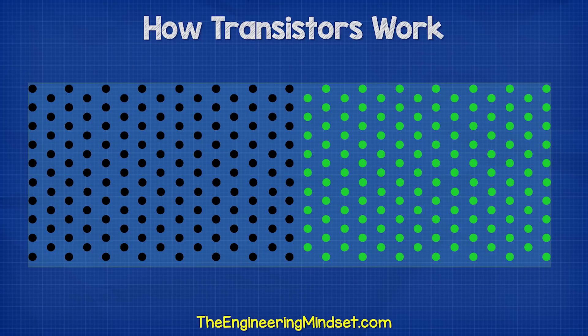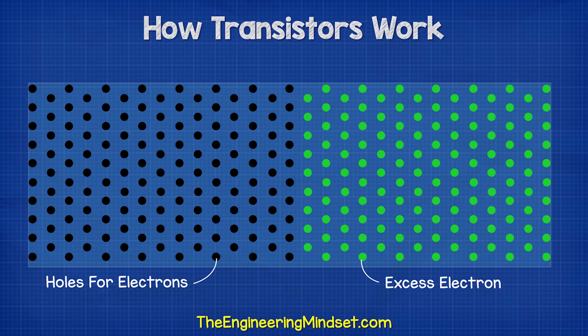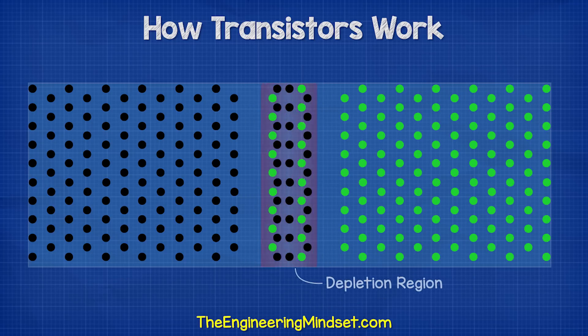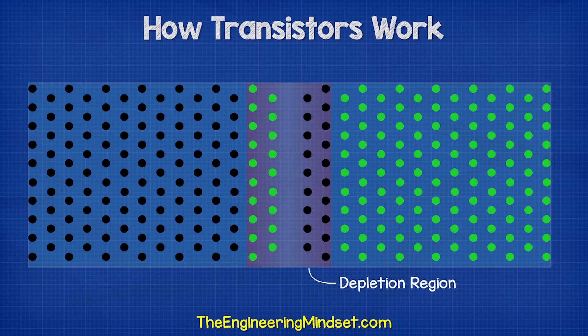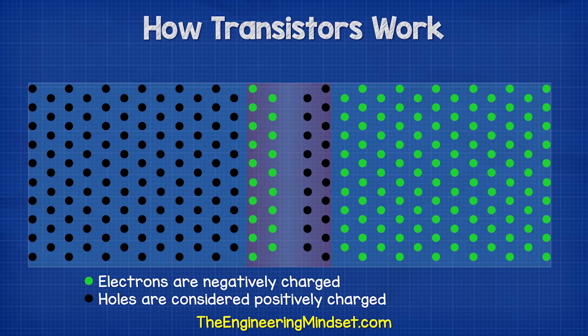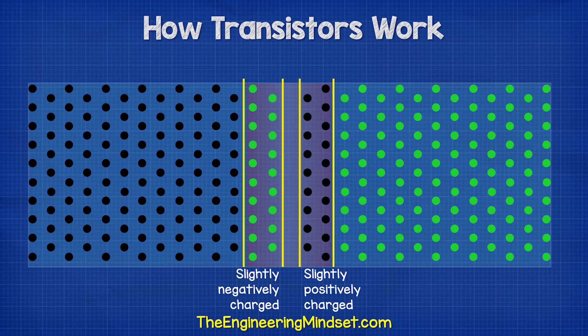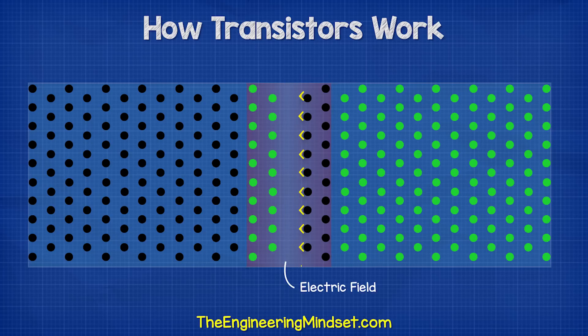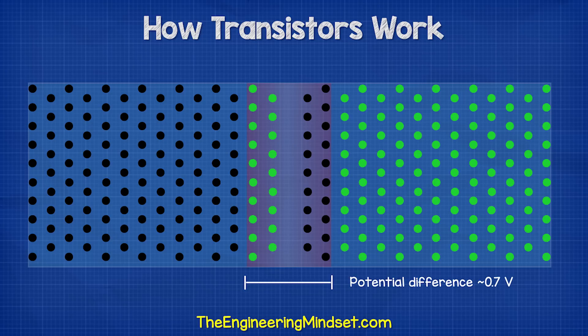At this junction, we get what's known as a depletion region. In this region, some of the excess electrons from the N-side will move over to occupy the holes in the P-side. This migration will form a barrier with a buildup of electrons and holes on opposite sides. The electrons are negatively charged and the holes are therefore considered positively charged, so this buildup causes a slightly negatively charged region and a slightly positively charged region. This creates an electric field and prevents more electrons from moving across. The potential difference across this region is typically around 0.7 volts.